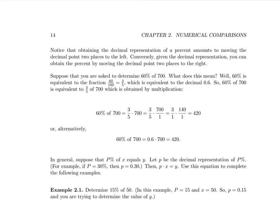Suppose that you are asked to determine 60% of 700. What does this mean? Well, 60%, that's 60 out of 100, is equivalent to the fraction sixty one-hundredths, or when simplified, three-fifths, which is equivalent to the decimal 0.6. So, 60% of 700 is equivalent to saying three-fifths of 700. If you were going to calculate three-fifths of 700, you would do that by multiplying three-fifths by 700.